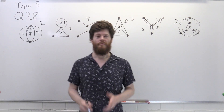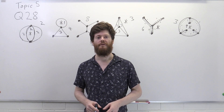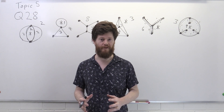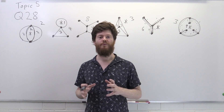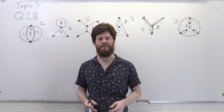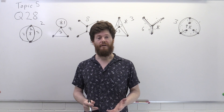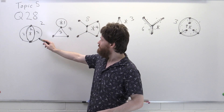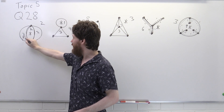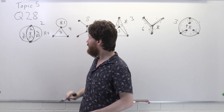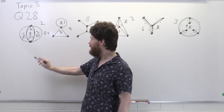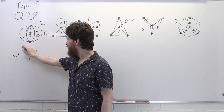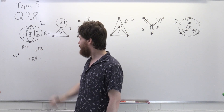Now we come to part C about the duals of these planar graphs. Duals do not always exist — they only exist for planar graphs — and the dual depends on how you draw the graph in the plane. The basic idea of a dual is that you swap regions with vertices. Here we have a graph with four regions, so let's label them r1, r2, r3, and r4. In the dual, each region corresponds to a vertex.